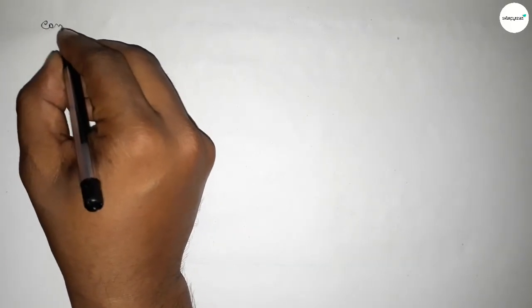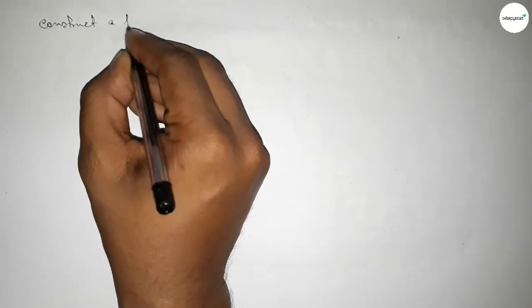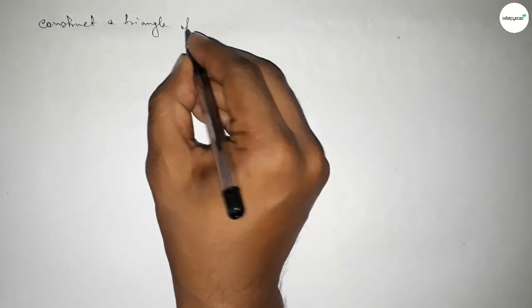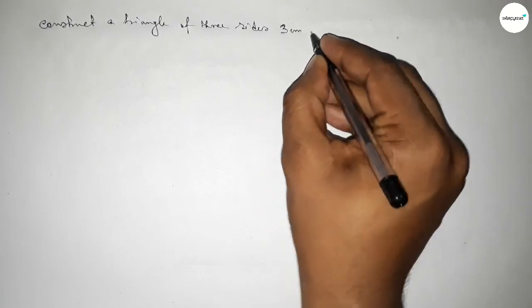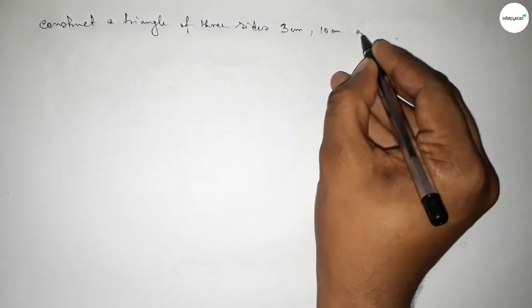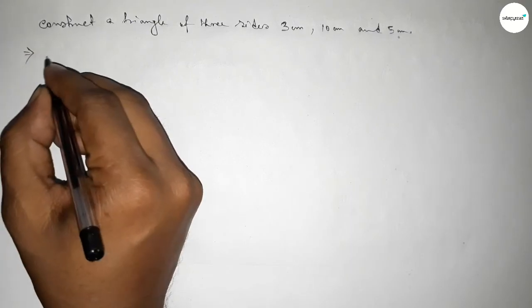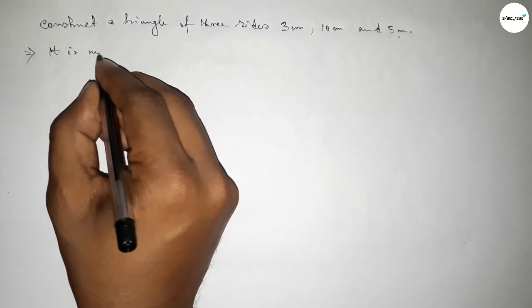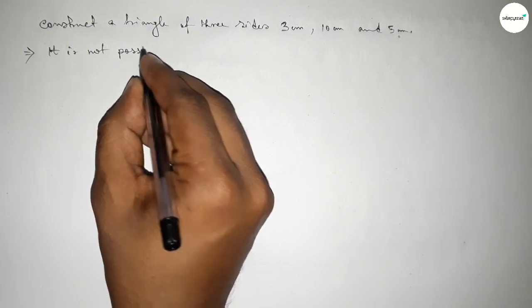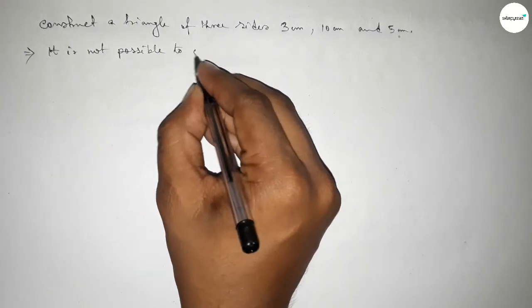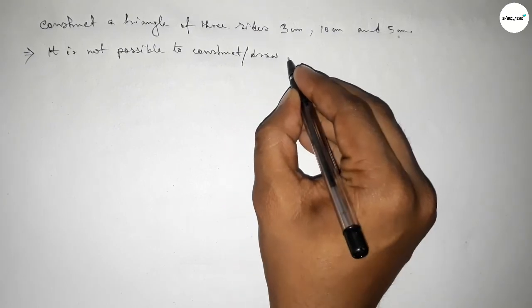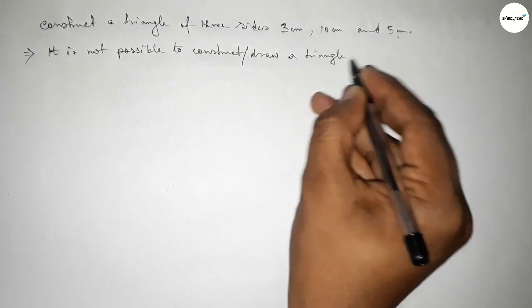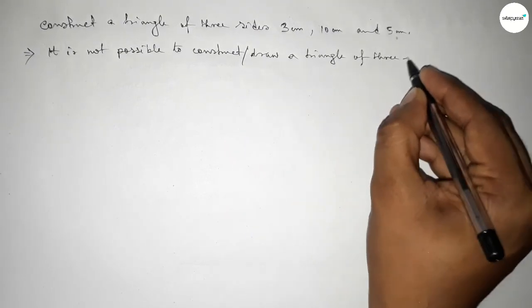Hi everyone, welcome to SI Share Classes. Today in this video we have to discuss constructing a triangle with three sides: 3 centimeter, 10 centimeter, and 5 centimeter. It is impossible to construct or draw a triangle using these three sides.